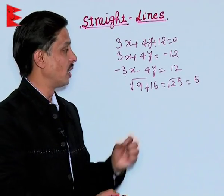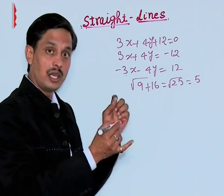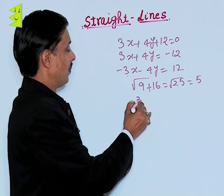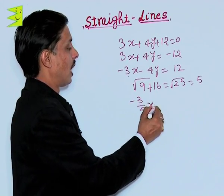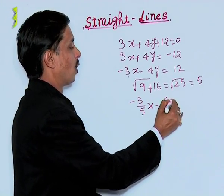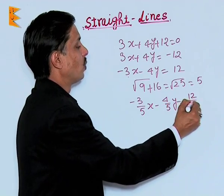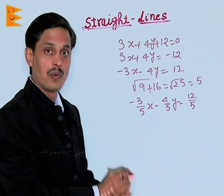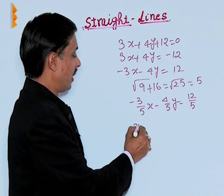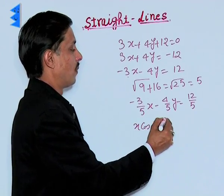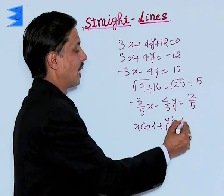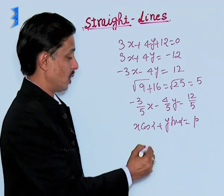Divide the total equation, both sides, each term by 5. This becomes minus 3 upon 5 x minus 4 upon 5 y equals 12 upon 5. You can compare it with x cos alpha plus y sin alpha equals p.